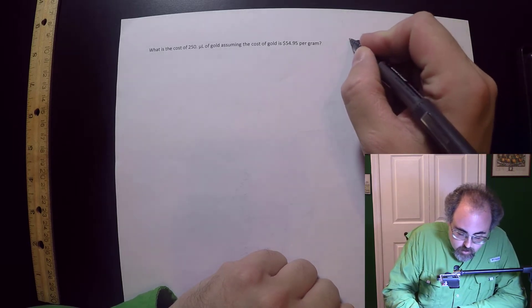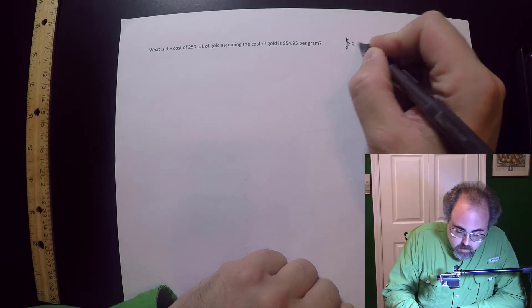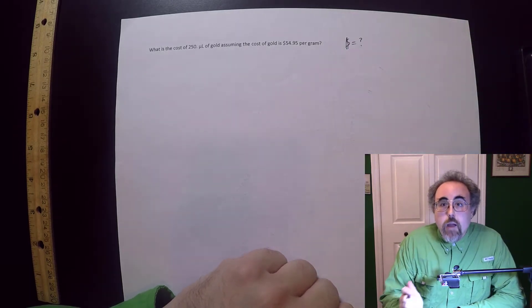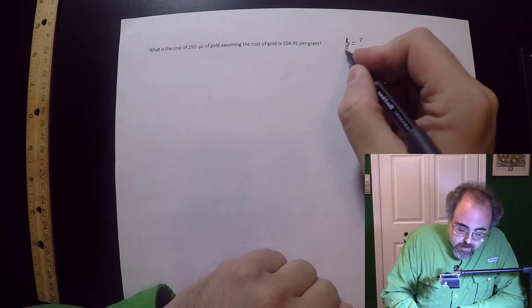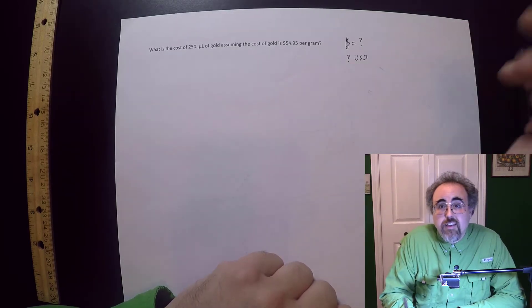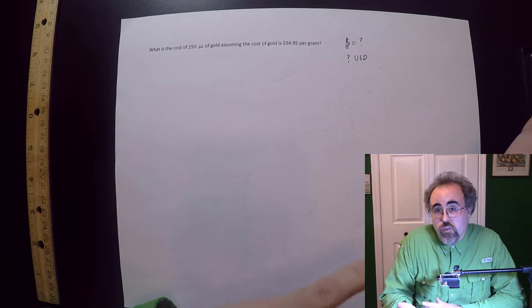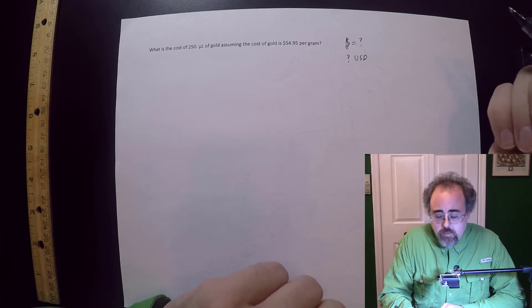So obviously what I'm looking for is going to be cost. Now I'm actually going to want to say, I'm not going to call it this, I'm going to call it USD. This gives me two pieces of useful properties. That was a weird sentence wasn't it?